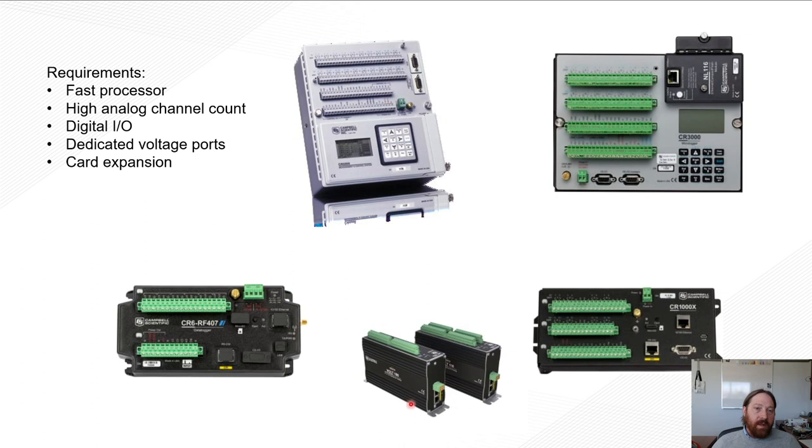So really, there were some data loggers earlier than the CR5000 that were used for eddy covariance, but the CR5000 was really the one that brought us to the forefront for data logging eddy covariance data, and it allowed us to have high channel counts in a card module and a processor fast enough to take 10 or 20 Hz measurements and store them. From there, we moved to a CR3000, which had an even better processor than the 5000, had less channel count, but still quite a few channels, and an expandable module for a card.